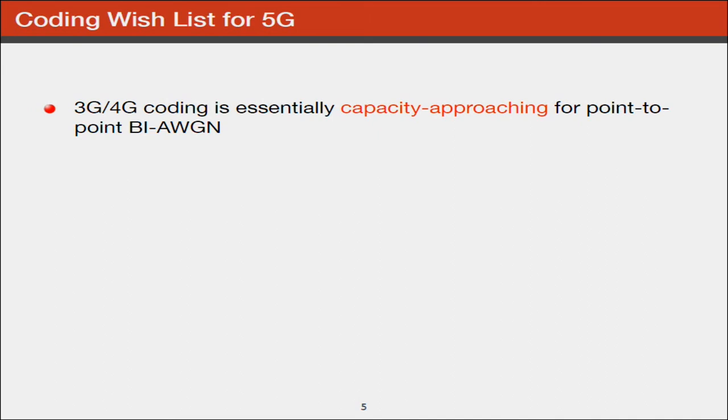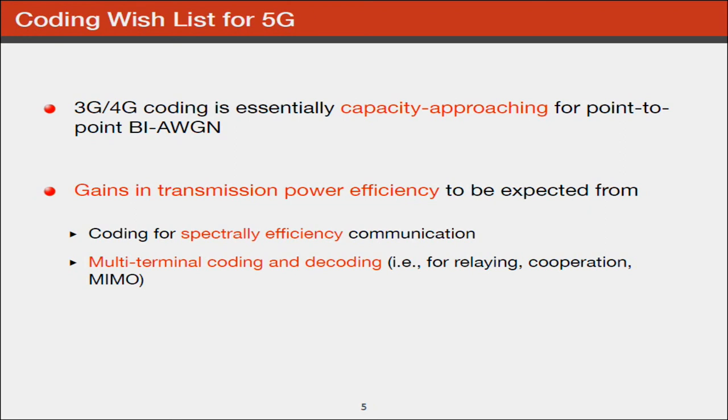What is our wishlist for 5G? We know that 3G and 4G codes are capacity approaching for point-to-point binary input channels. However, we want to be more power efficient. We have to find coding for spectrally efficient communication and look at multi-terminal coding. Many codes are only for point-to-point channels, so the multi-terminal setup is still wide open. We also need gains in computational power efficiency - low complexity decoding and encoding. Is there any code which ticks all these boxes? Unfortunately, one size does not fit all. We have to have several coding strategies.